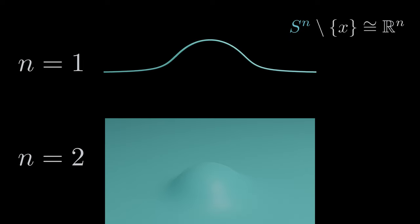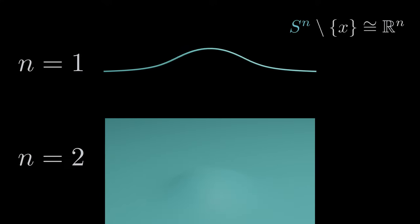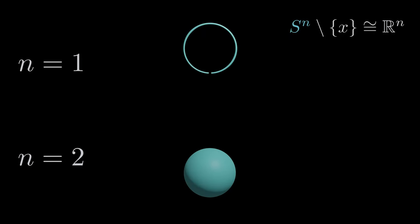There are other homeomorphic objects I want to talk about. An n-sphere with some point removed and n-dimensional real space. Here I'm showing cases n equals 1 and 2, but this also holds true for arbitrary dimensions n.